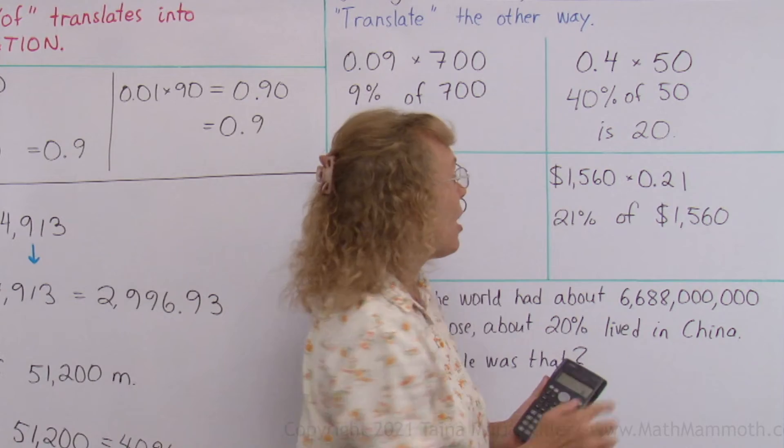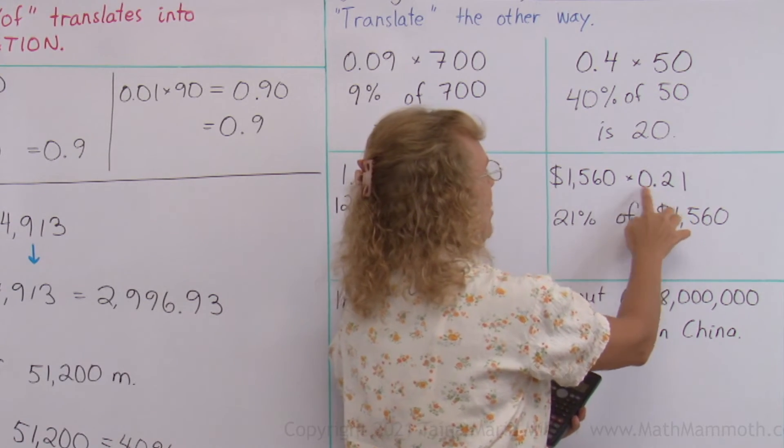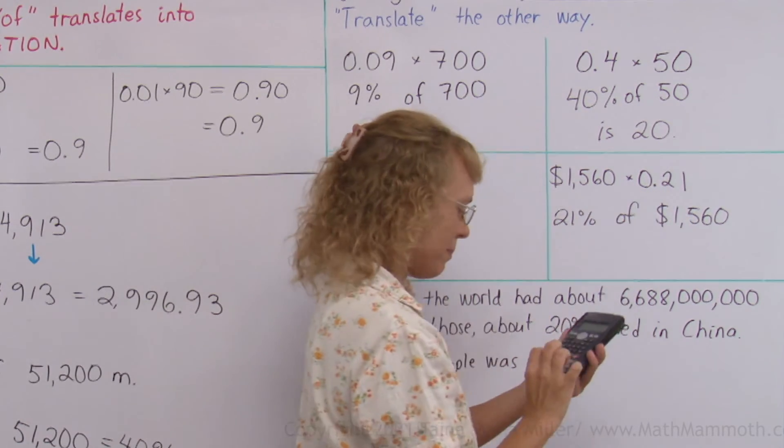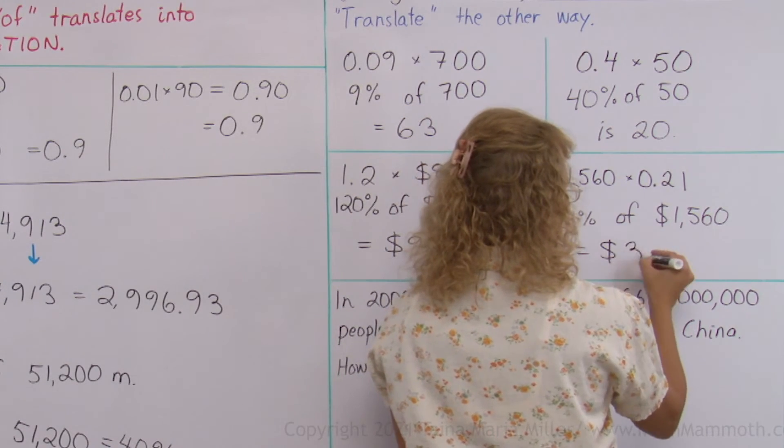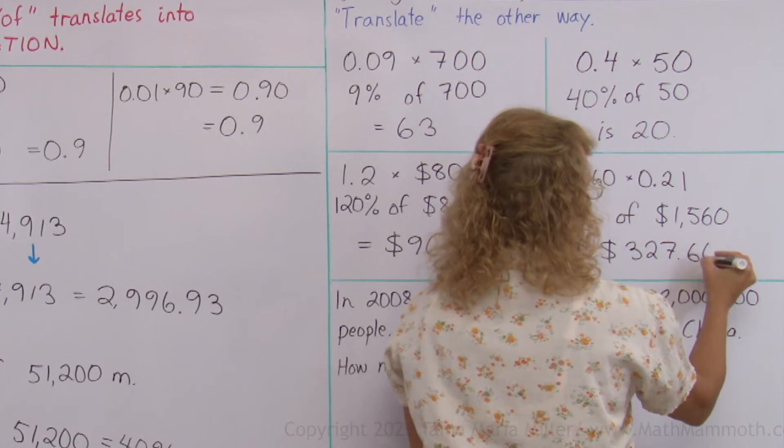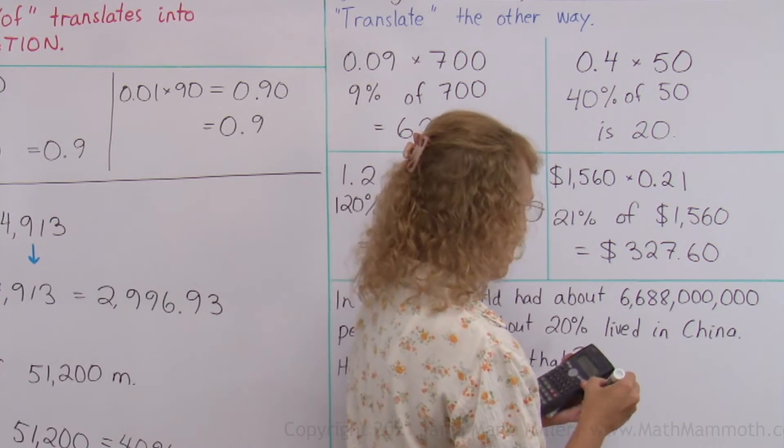Now though, when I use my calculator, I'm going to use this. I'm going to use the decimal times the number or vice versa. It is 327.60.